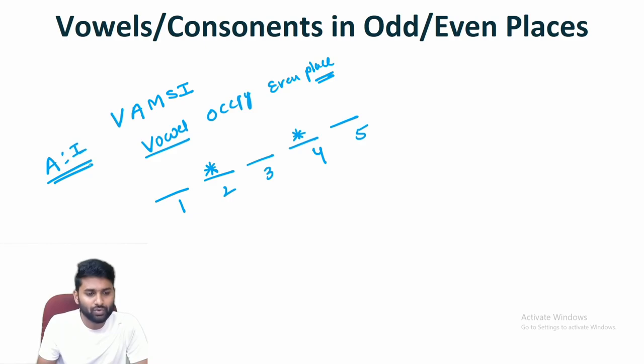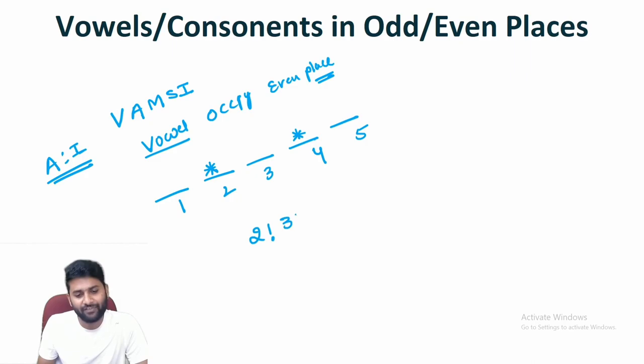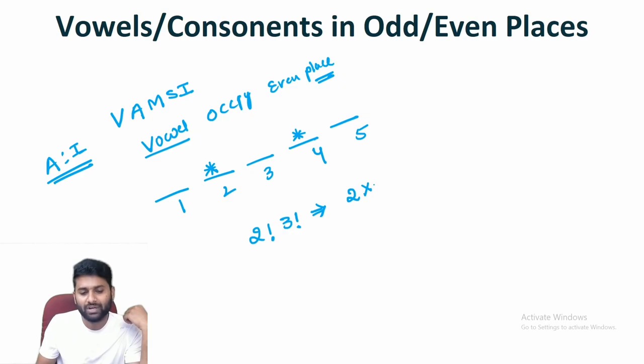So two vowels can be arranged in two places in exactly 2! ways. In the same way, remaining three consonants can be arranged in 3! ways. So for WOMC with vowels occupying even places, the total arrangement is 2! × 3! = 2 × 6 = 12.